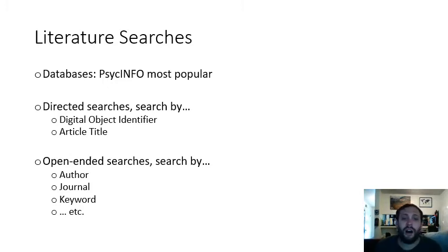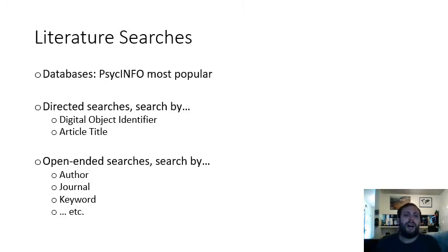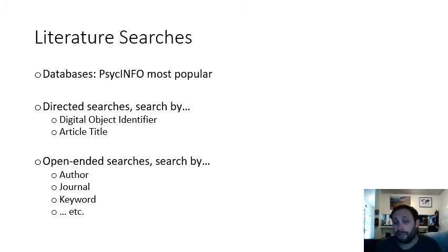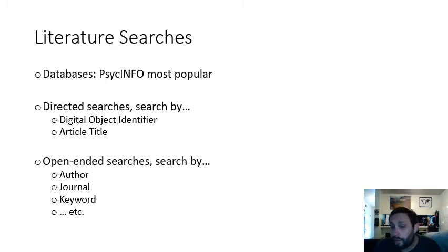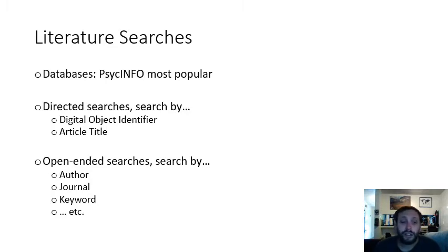For literature searches in the psychology field, we often use PsychInfo — it's one of the most popular databases. I personally use Google Scholar, but I'll be teaching you PsychInfo because it has all the information you need. We can get directed searches using a digital object identifier — called a DOI — which is a series of numbers to find a specific article, or use the article title. You'll probably be using open-ended keyword searches the most often, typing in your theory name to find associated journal articles.